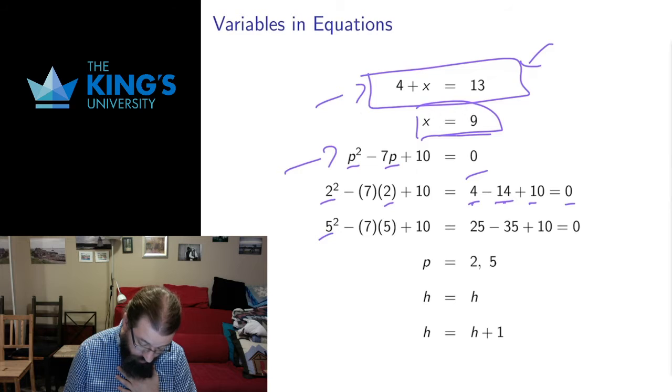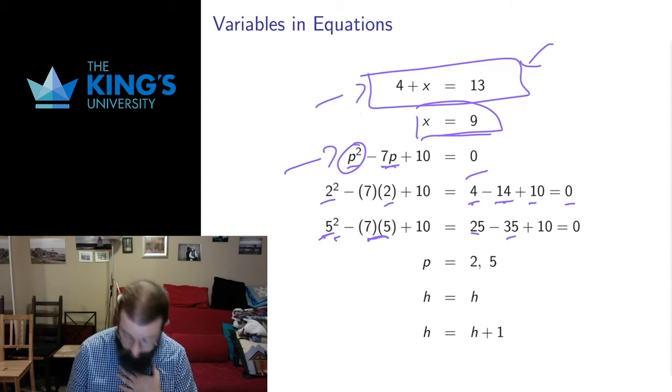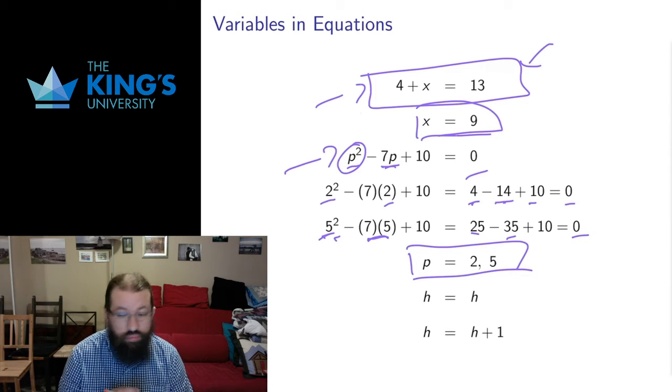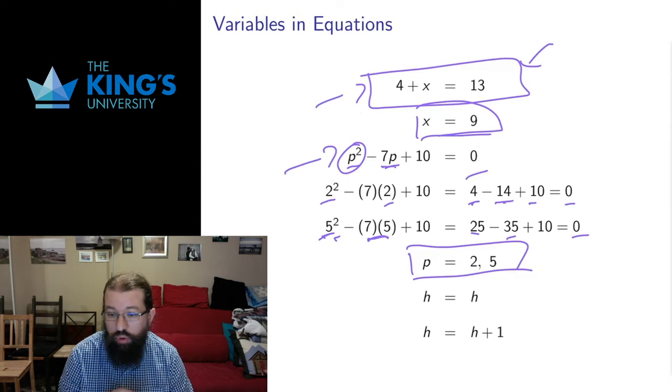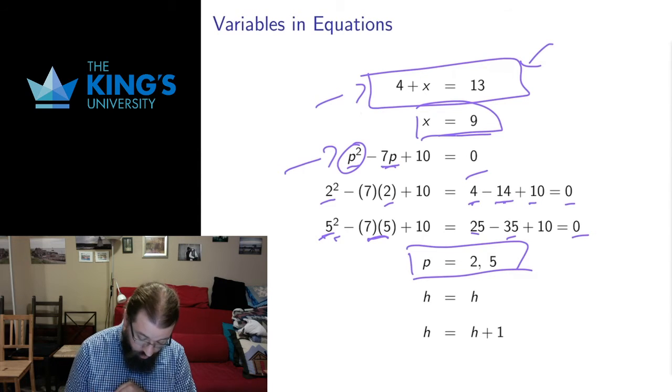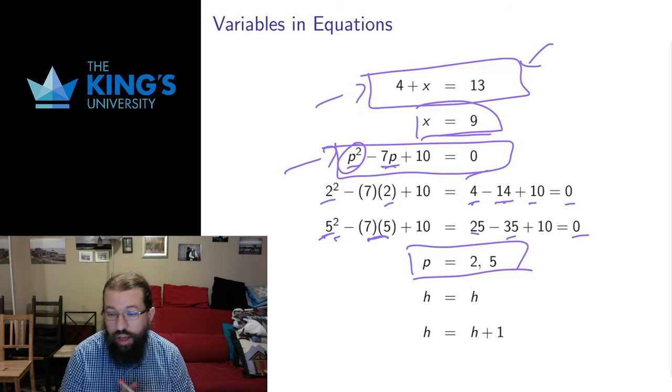But I can put in 5 as well. 5 squared is 25, 7 times 5 is 35, 25 minus 35 plus 10 is also 0. Both of those work. An equation can have more than one solution. There can be multiple answers to the question of what values of p satisfy the equation.